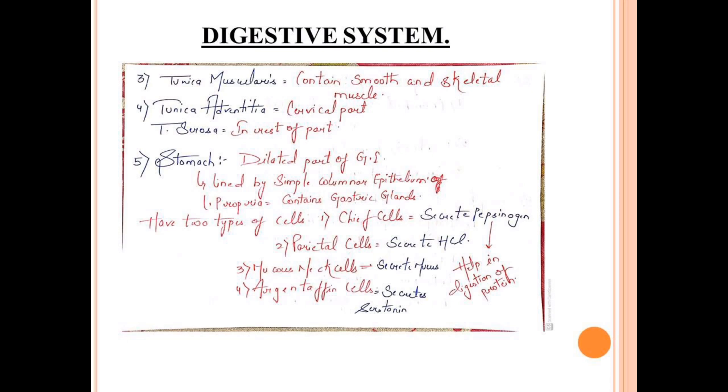Moving to the next, stomach. Stomach is a dilated portion of the GI tract. The lining of the stomach is simple columnar epithelium. Lamina propria has gastric glands which do secretions with the help of different cells. Talking about cells, first are chief cells which secrete pepsinogen that helps in protein digestion. Parietal cells secrete HCl. Mucus neck cells secrete mucus. Argentaffin cells secrete serotonin, which is a neurotransmitter.